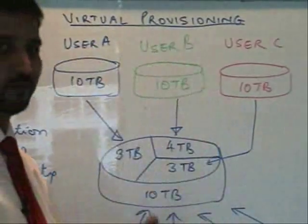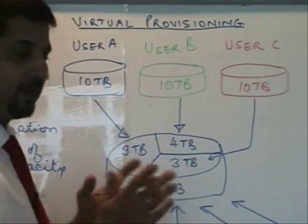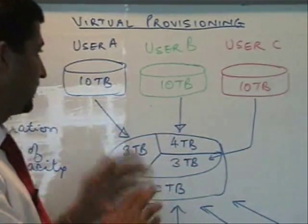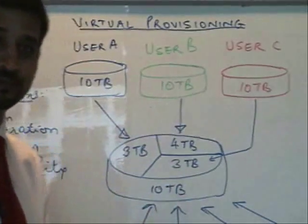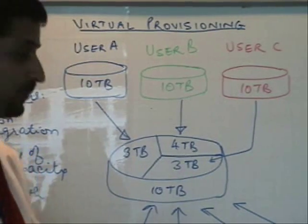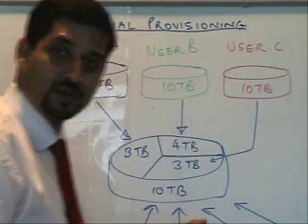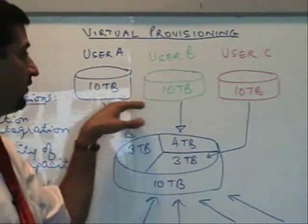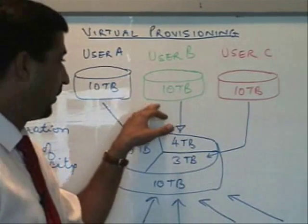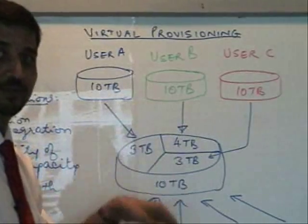Let's look at a typical infrastructure. These are users, or you can call them applications or servers, whichever way you would call it. Fundamentally, the issue here as a hypothetical example is that all of them need 10 terabytes of capacity. The problem is how can we provide it — there are budget constraints or possibly no capacity left in the storage. How do we provision for 30 terabytes to these three users? More importantly, are they going to use all 30 terabytes right now at this moment?